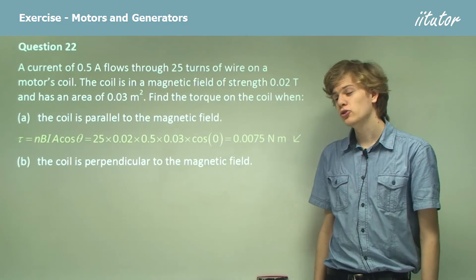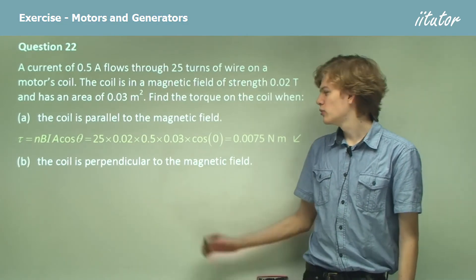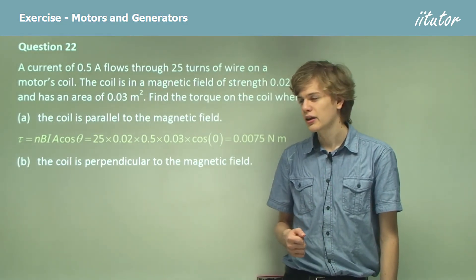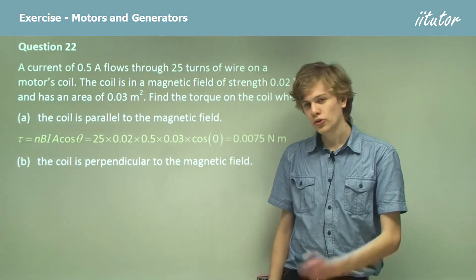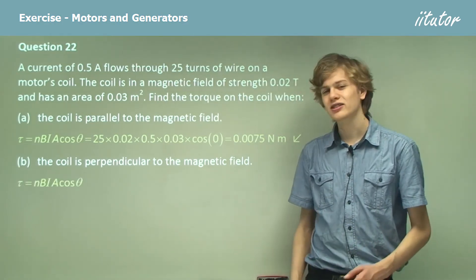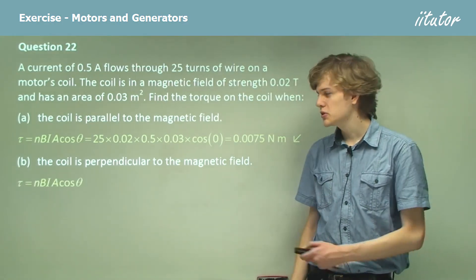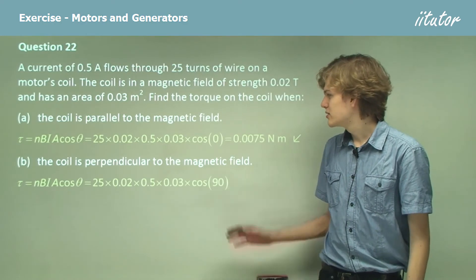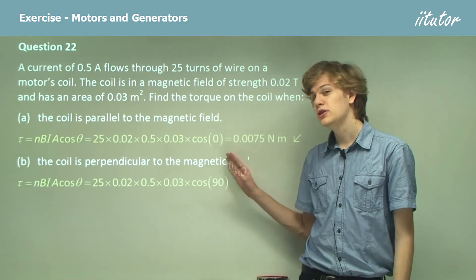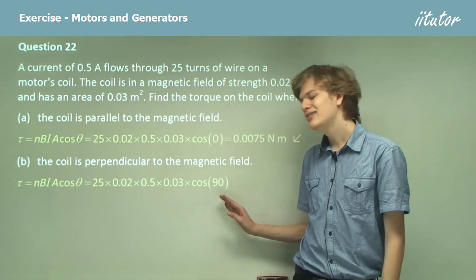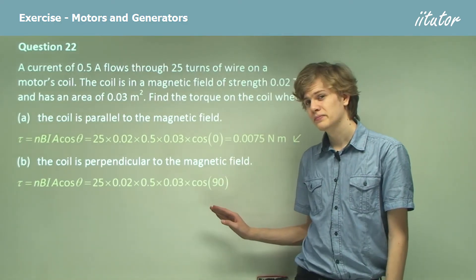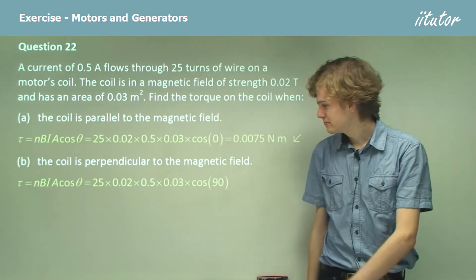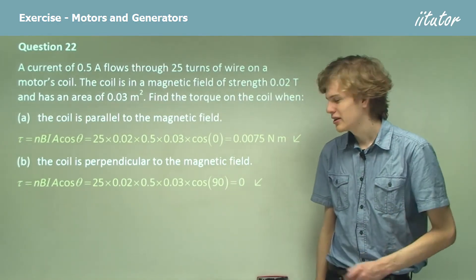Part B: find the torque when the coil is perpendicular to the magnetic field. Using the same equation and substituting in all the numbers, the only difference is that instead of cosine 0, we now have cosine 90 degrees, and the cosine of 90 degrees is 0, so the torque is zero.